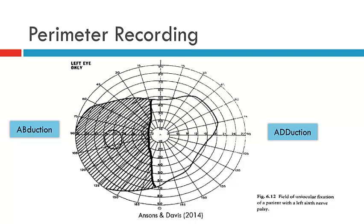Using this as an example of a recording, here we have a patient who has had their field of uniocular fixation mapped. The white areas here indicate areas of where there was eye movement, and the shaded area are areas where the eyes were unable to move within.